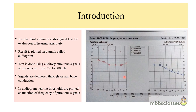Pure tone audiometry is the most common audiological test for evaluating the hearing sensitivity of a person. When we do the test, the result is plotted on a graph called an audiogram. This is a picture of an audiogram showing the right and left ear results, and the result is interpreted as follows.